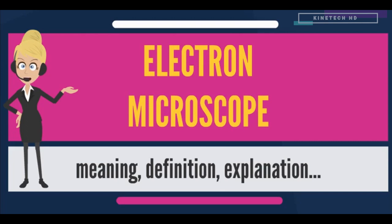Electron microscopes are used to investigate the ultra-structure of a wide range of biological and inorganic specimens including microorganisms, cells, large molecules, biopsy samples, metals, and crystals. Industrially, the electron microscope is often used for quality control and failure analysis. Modern electron microscopes produce electron micrographs using specialized digital cameras and frame grabbers to capture the image.